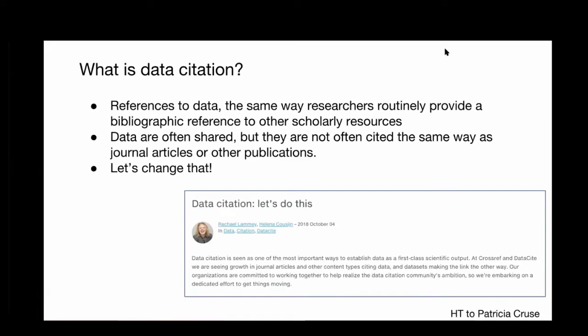One of the first large-scale initiatives to establish data citation as a standard academic practice was the Force11 Joint Declaration of Data Citation Principles, back in 2014. That declaration was endorsed by over a hundred organizations in the scholarly community, as well as many individuals. Following this agreement on how data citation should be done, many projects followed. Within Force11 there was the Data Citation Implementation Pilot, which brought together publishers and repositories to put data citation into practice.